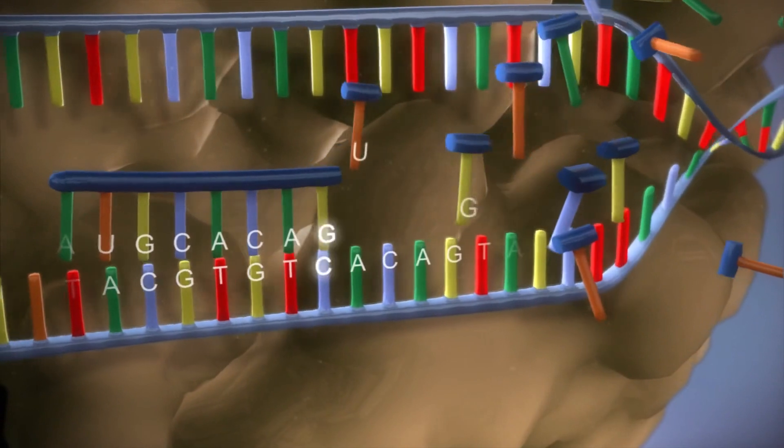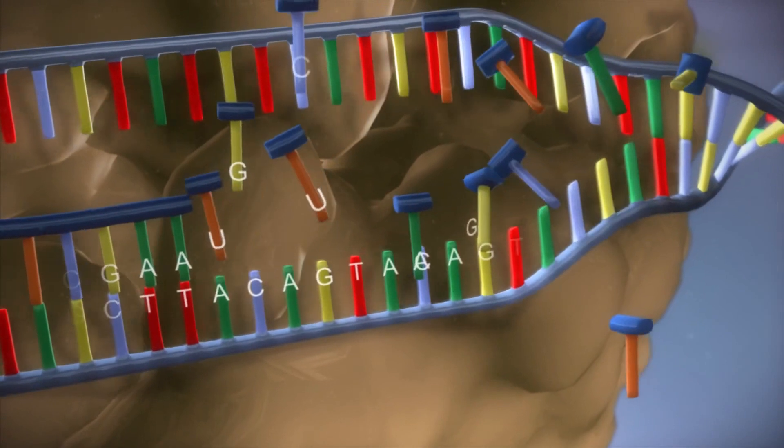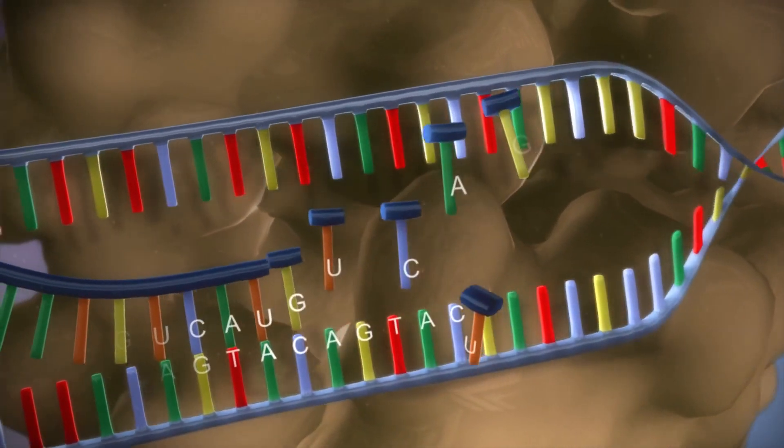The DNA code determines the order in which the free bases are added to the messenger RNA. This process is called transcription.